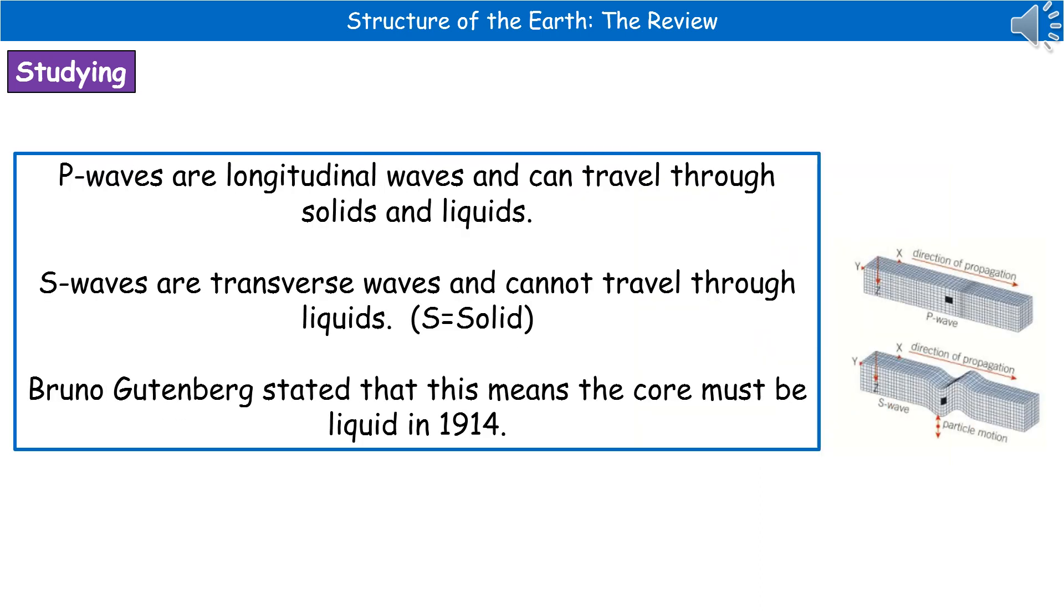To understand why this is, we need to know more about these two types of waves. P-waves, or primary waves, are longitudinal waves capable of traveling through both solids and liquids. S-waves, or secondary waves, are transverse waves that can only travel through solids.